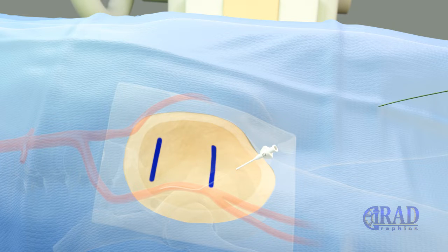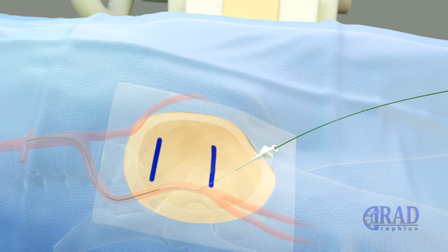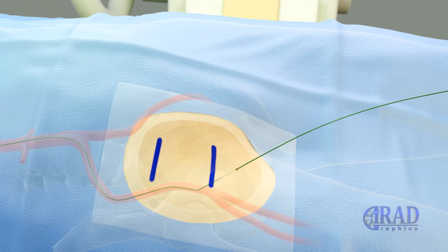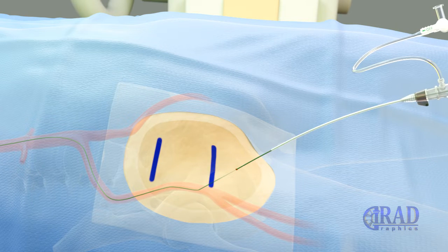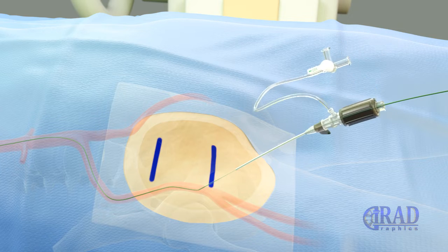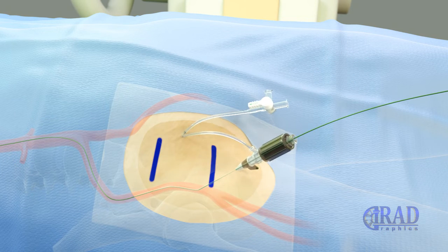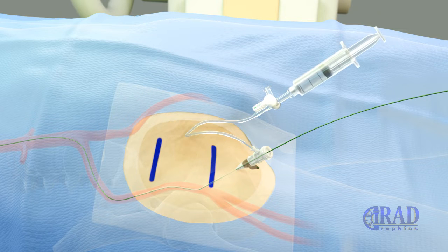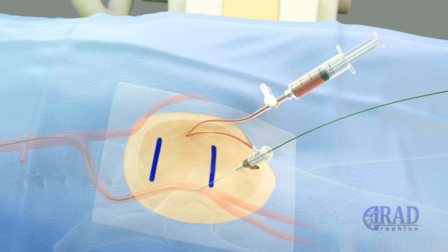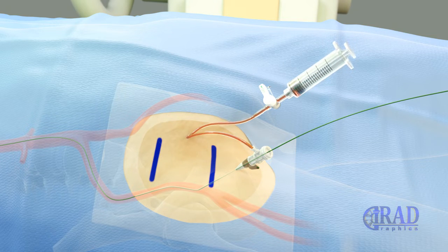Then, the microwire and transitional sheath dilator are swapped for a larger and longer wire, which is threaded through the sheath into the aorta. Then, the outer layer of the transitional sheath is exchanged for a vascular sheath, and the dilator of the vascular sheath is removed. At this point, the sheath is aspirated and flushed with heparinized normal saline.